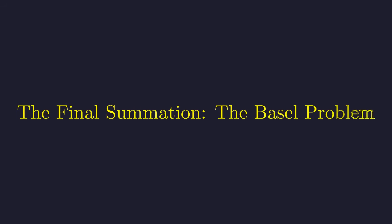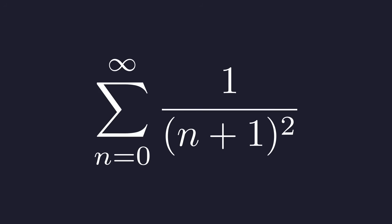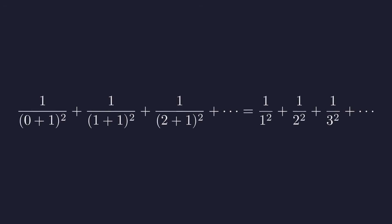All right, let's put this result back into the sum and watch what emerges. Our entire complicated integral has collapsed down to this clean infinite series. Let's see what this looks like. When n is 0, we get 1. When n is 1, we get 1 over 4. When n is 2, we get 1 over 9. And so on. This is the sum of 1 over the square of each positive integer.